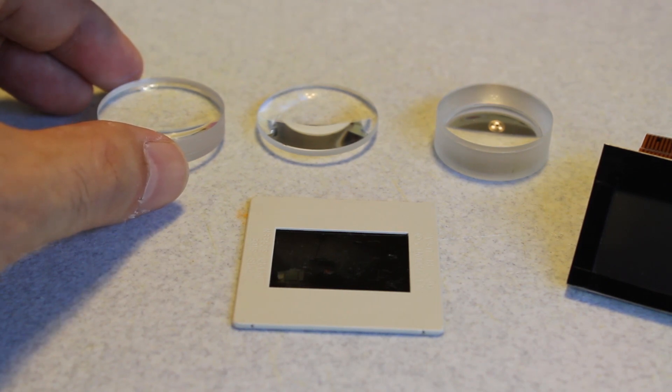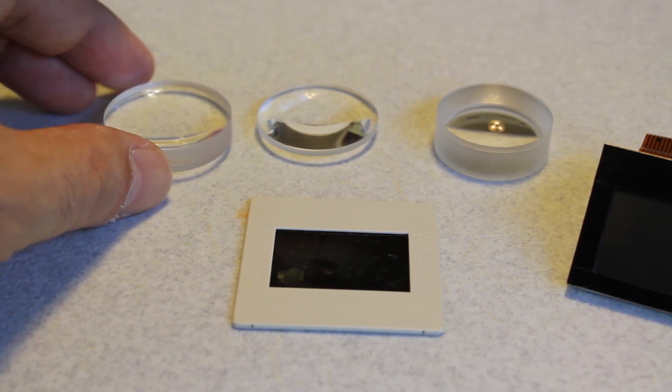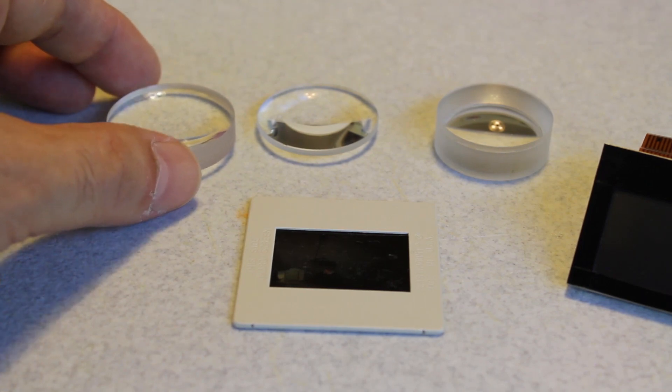A plossl gives you about 50 degrees field of view and erfle gives you maybe 65 degrees field of view. And because we're interested in VR in wider fields of view, obviously we want as wide a field of view as we can get.